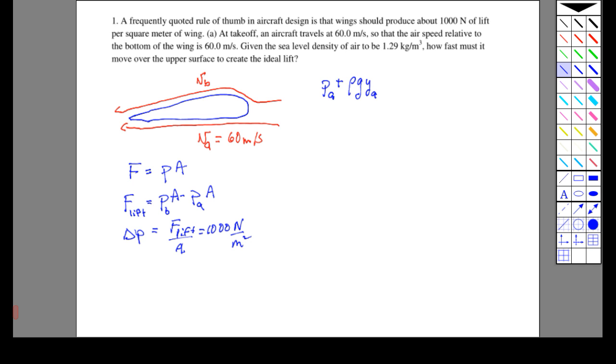We have P_A plus rho g Y_A plus one-half rho V_A squared—that's the left-hand side of Bernoulli's—and this should equal P_B plus rho g Y_B plus one-half rho V_B squared. It's V_B that we want.